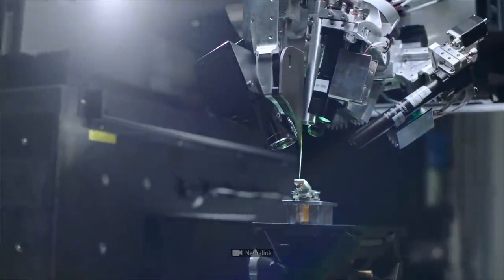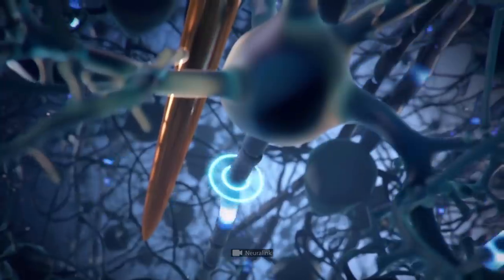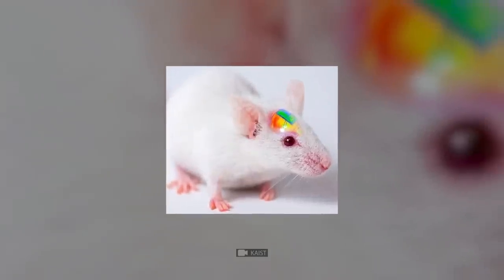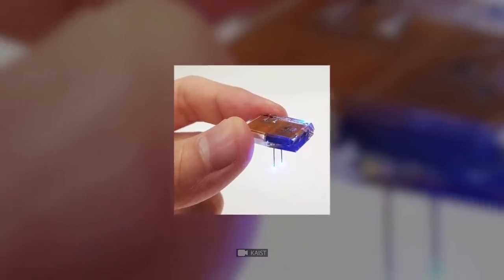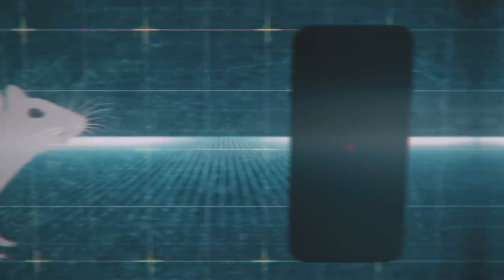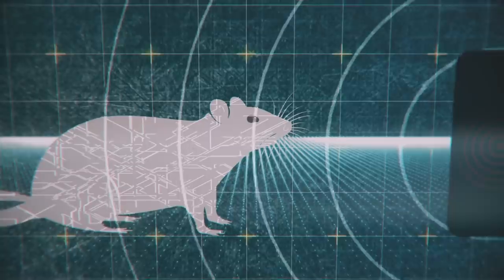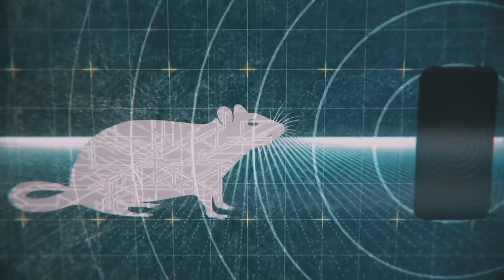However, with such revolutionary inventions, there's always the other side of the coin. This is an ordinary lab rat, and it's controlled by a normal smartphone app. The device in its skull receives signals from researchers and transmits impulses to the rodent's neural network, completely controlling its behavior.